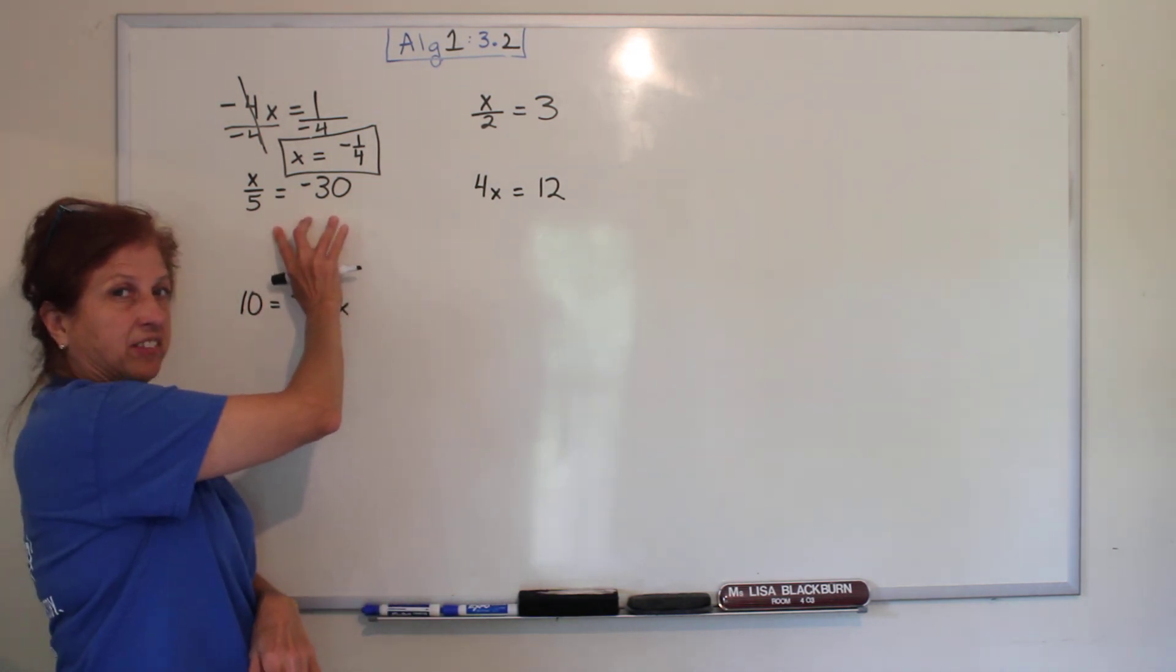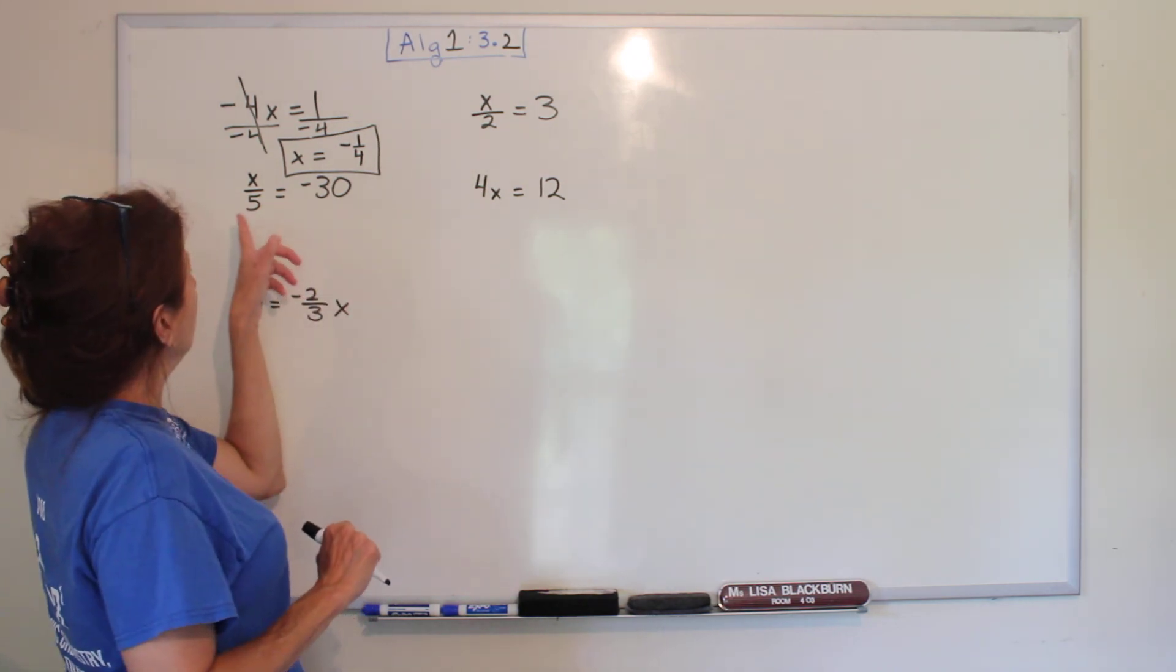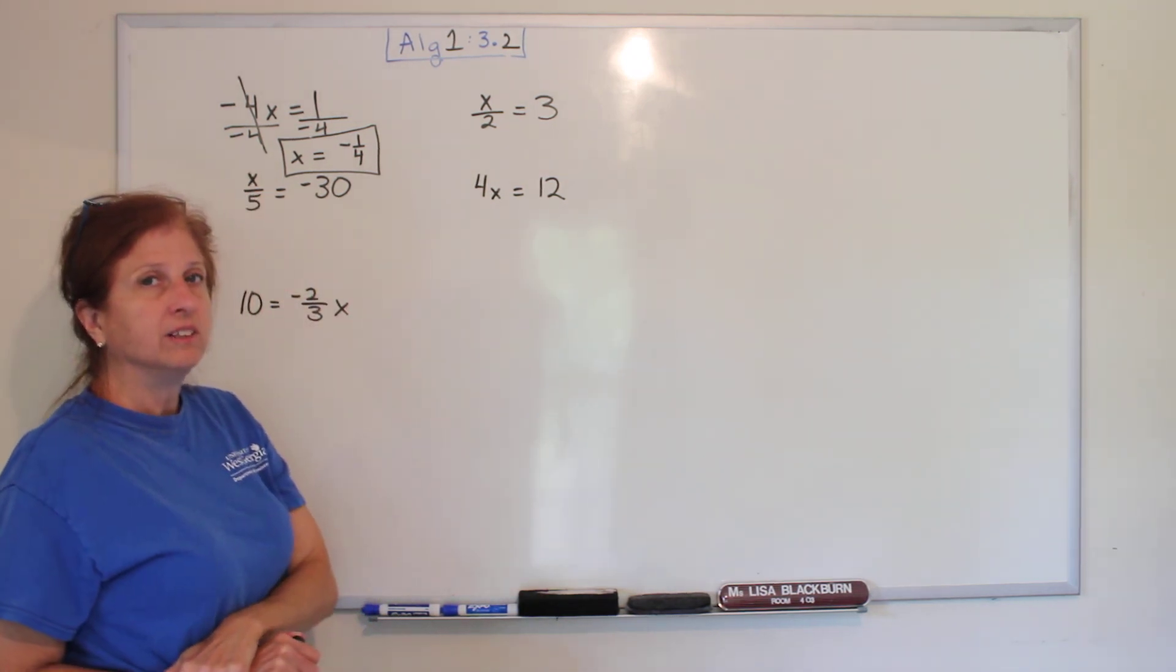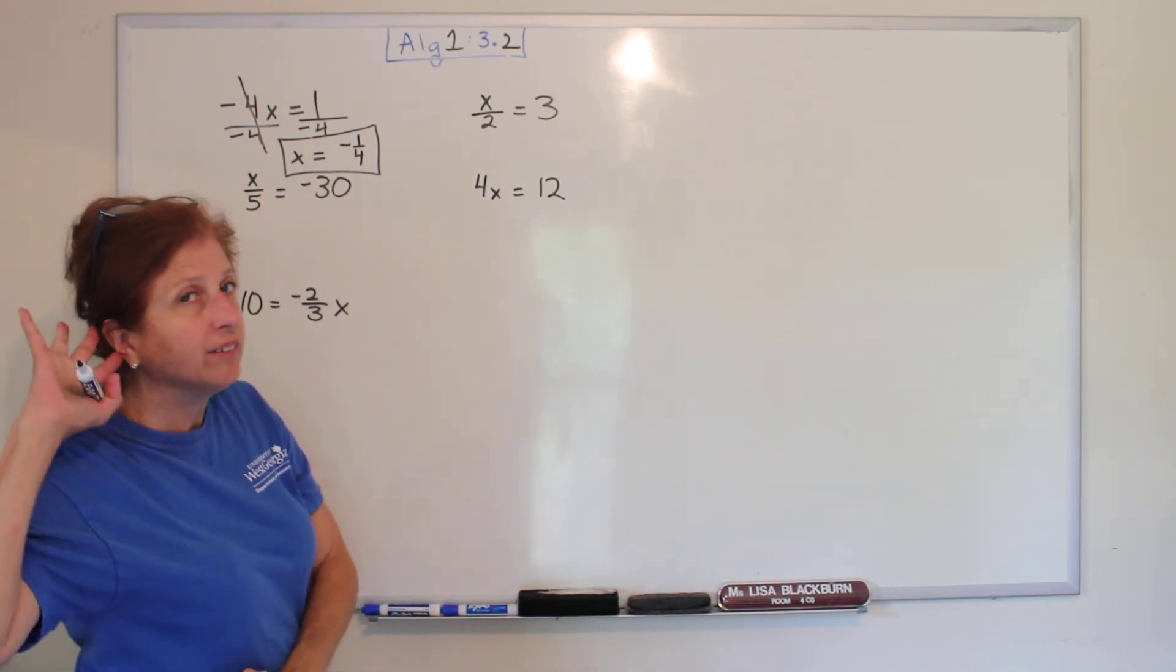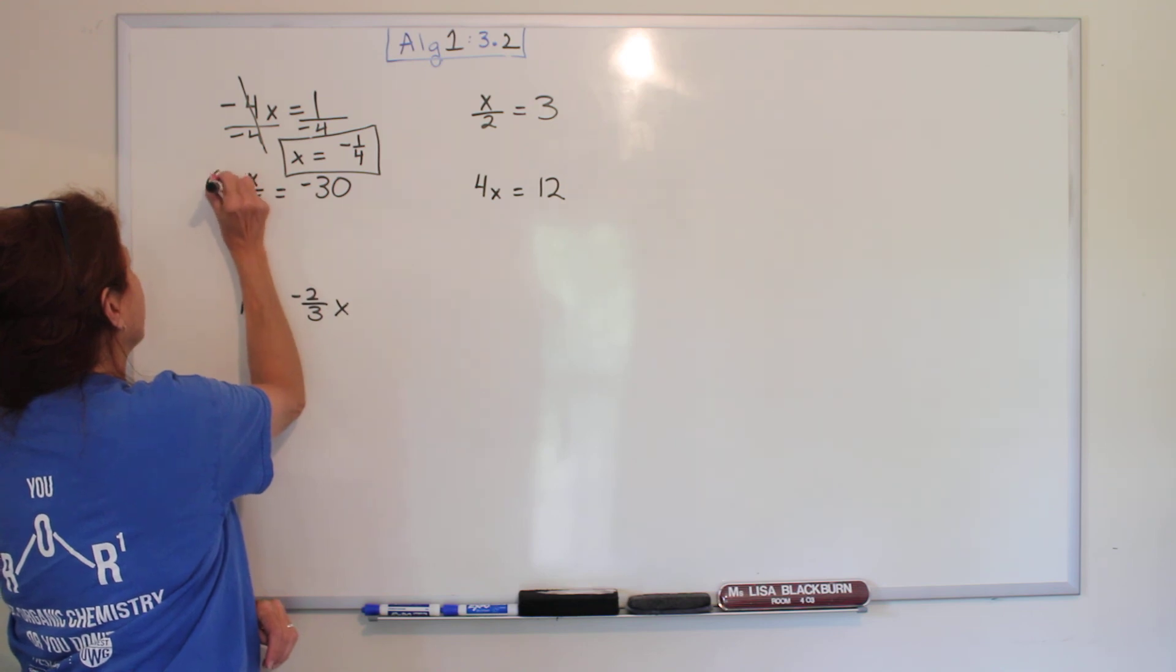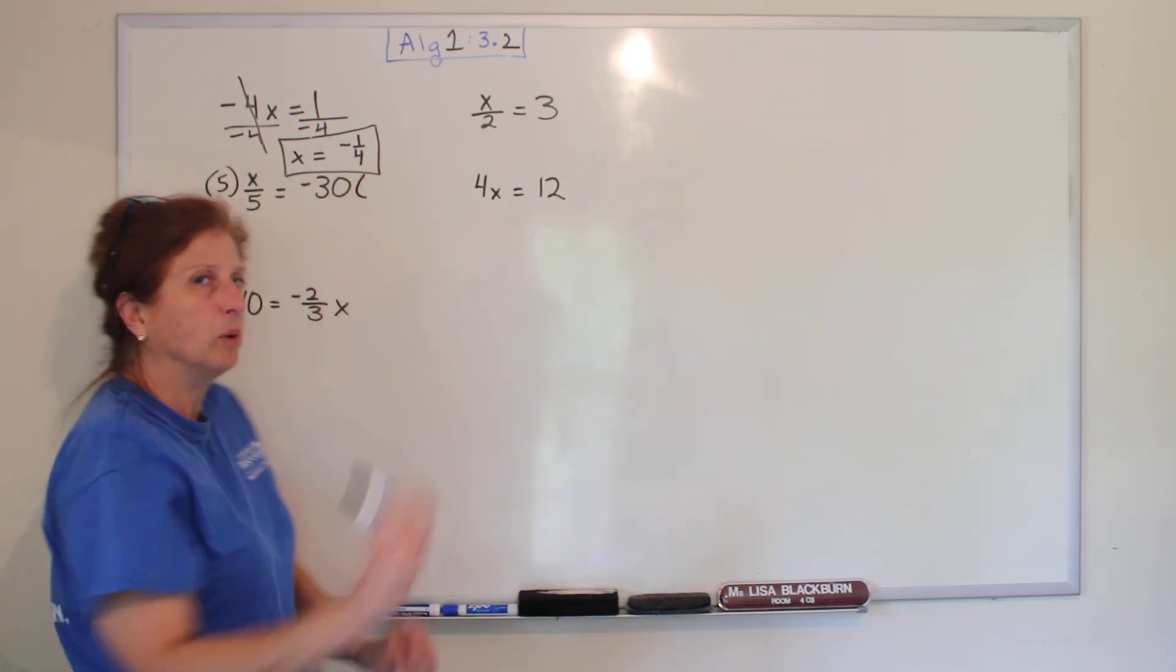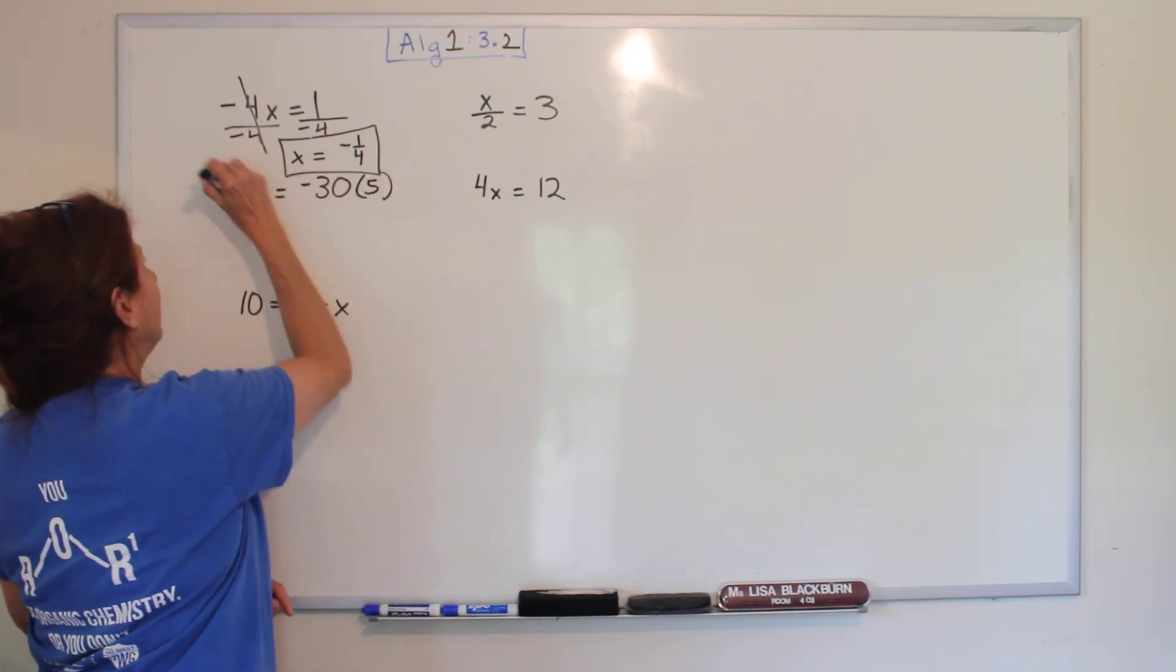Alright, how about this one? It looks fancy because it's got a fraction. So why is x not alone? It's being divided by five. So what's the opposite of divided by five? Multiplied by five. So I'm going to put it in parentheses up here. And what we do to one side, we do to the other. These cancel out.